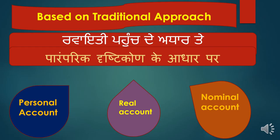Next, I will discuss the types of accounts based on the traditional approach — the conventional basis. Based on the traditional approach, accounts are classified into three parts: personal accounts, real accounts, and nominal accounts. Understanding these well will make the next parts of Plus One Accountancy — journal, ledger, and so on — much easier. Let's discuss the traditional approach.